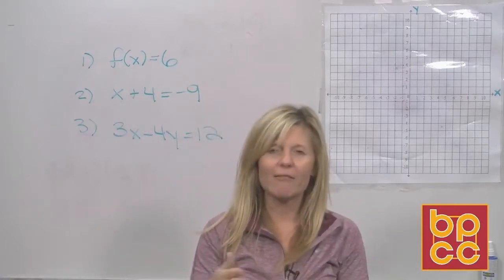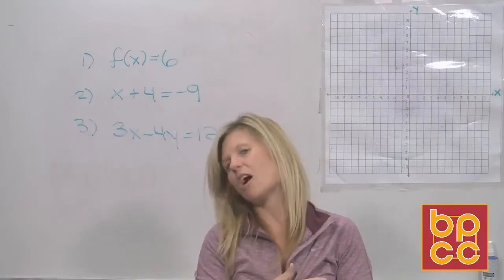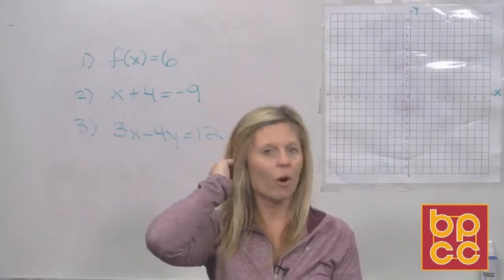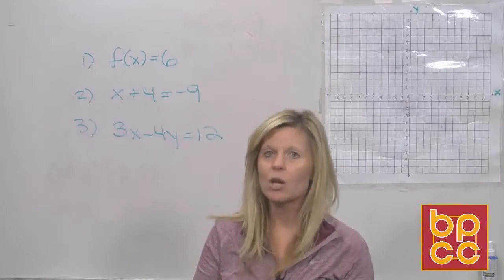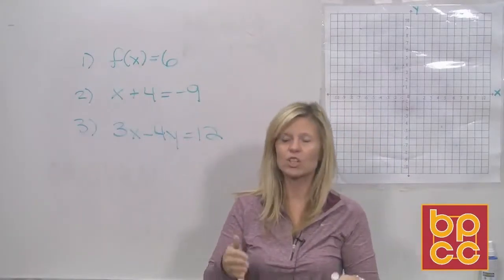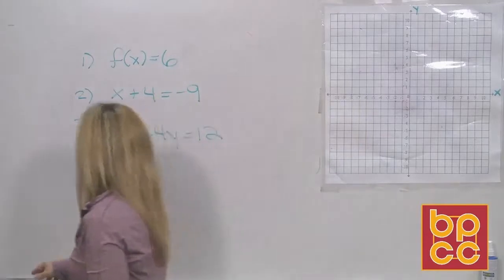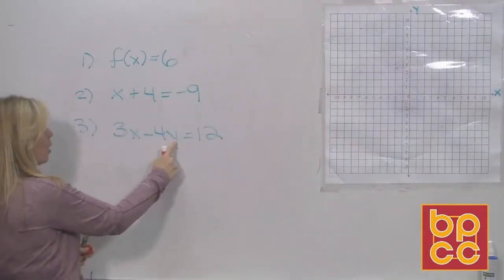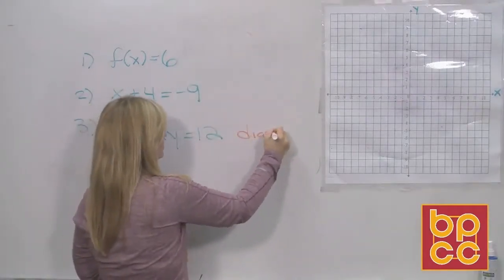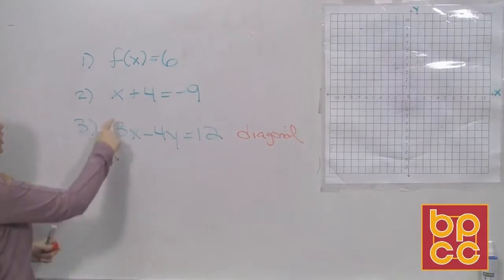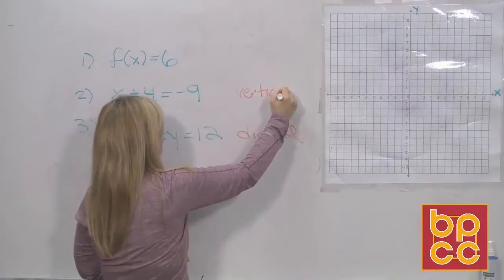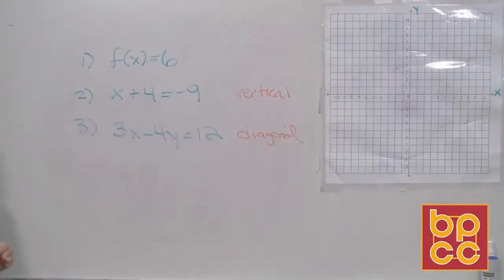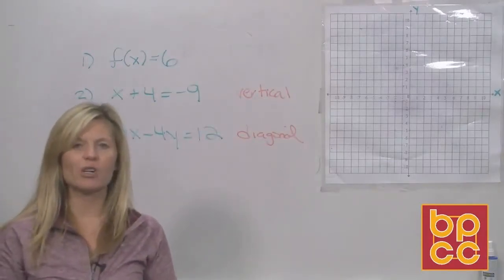So here we go, guys. Before you ever do anything with graphing, before you even try to answer the question, we've already discussed this. Decide what type of line it is. So when you're given an equation, decide which line it is. Well, out of all three of these, it's very obvious. Number three has an x and a y. So we know that this is a diagonal line. Equation two has just the letter x. So that must be a vertical line. Now, equation one doesn't have an x. It has an f(x). We've already discussed this. This is called function notation.